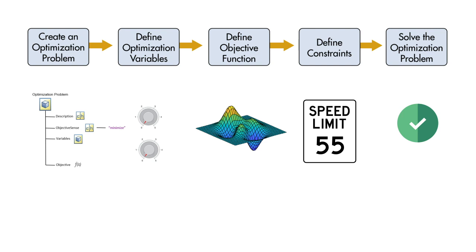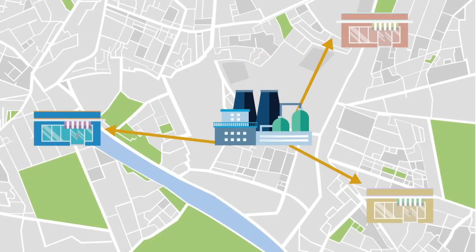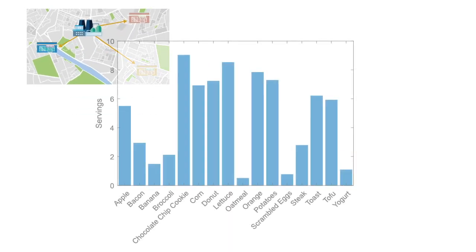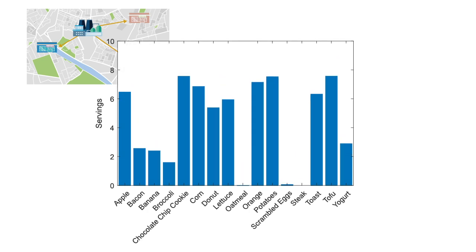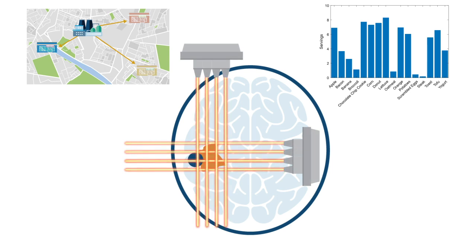By the end, you will have found the solution to three optimization problems: the best location for a factory which provides inventory to three stores, the best combination of foods for a healthy, balanced breakfast, and the optimal dose of radiation to deliver to a cancerous brain tumor.